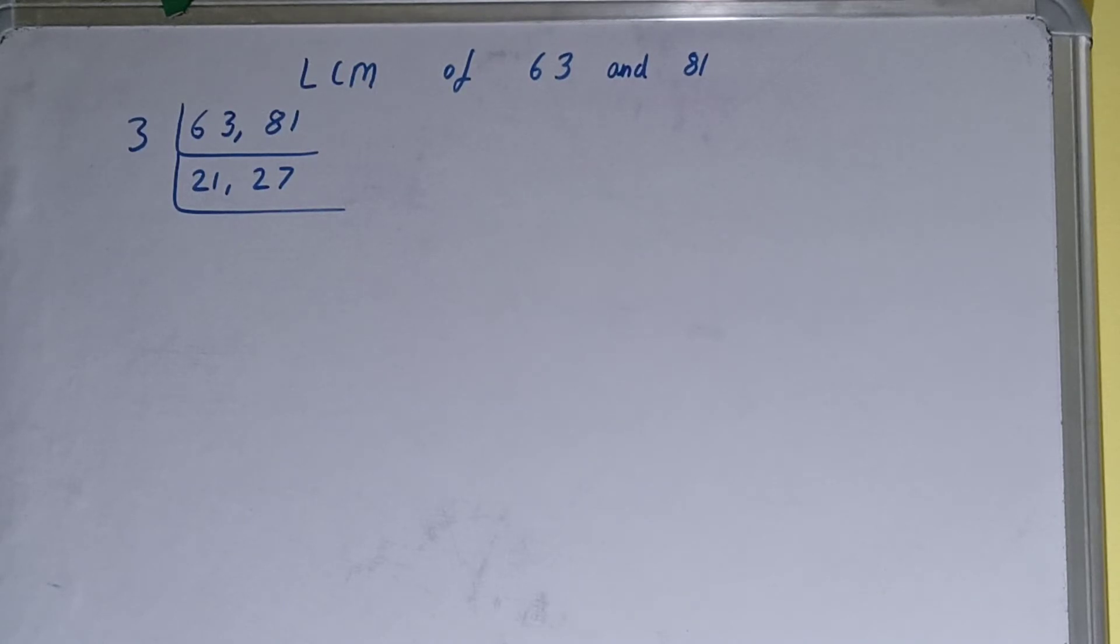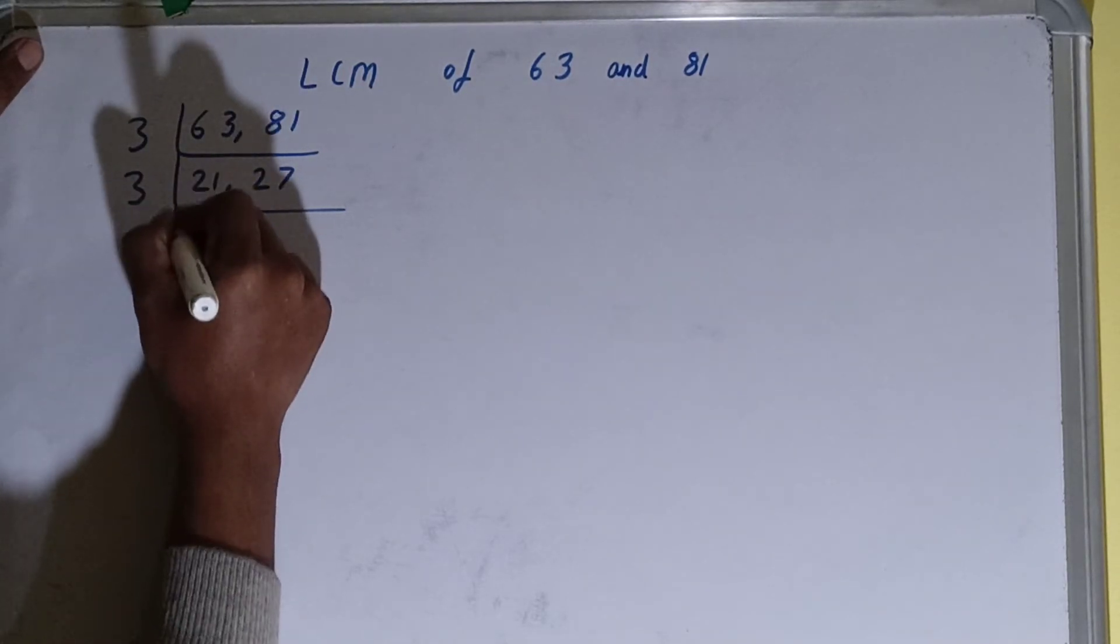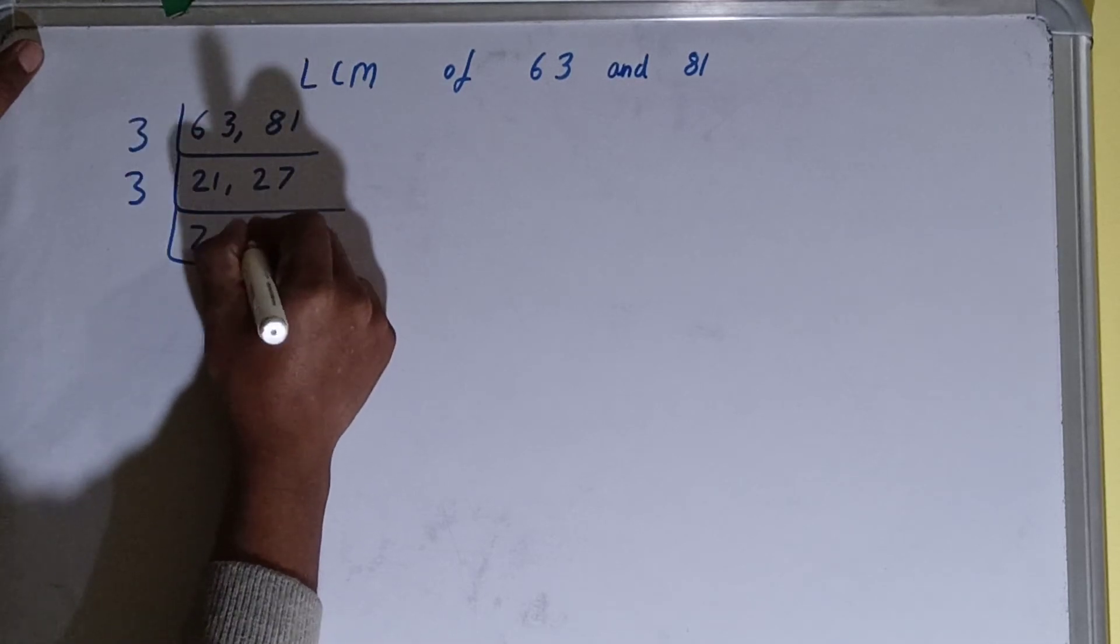Again, if we check, then again both the numbers can be divided by 3. So we'll divide, so this will become 7, this will become 9.